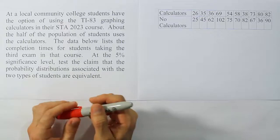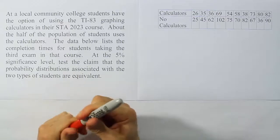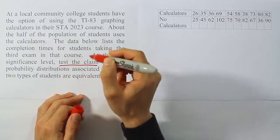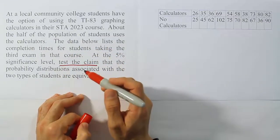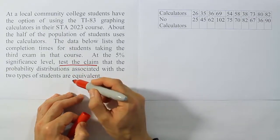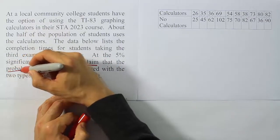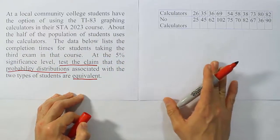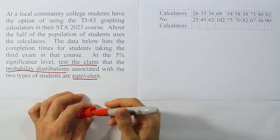So what we're asking here is basically to run a hypothesis test. It says test the claim that the probability distributions associated with the two types of students are equivalent. Now, this kind of phrase, when we talk about the probability distributions being equivalent, that sort of thing is something we usually see in a nonparametric procedure.